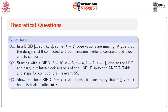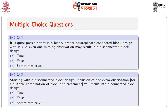This condition is not sufficient, because we can have a combination of B and V with B more than V but far from being a BIBD. It is quite possible that in a binary proper equi-replicate connected block design with K > 2, even one missing observation may result in a disconnected block design — is that true, false, or sometimes true? You have to think carefully about this.